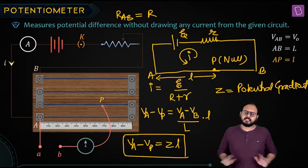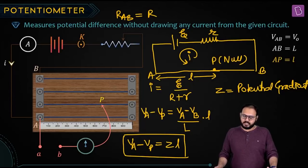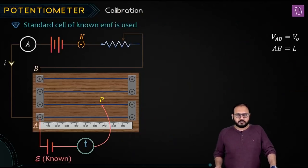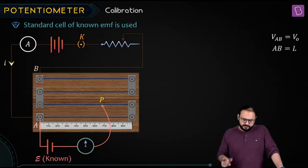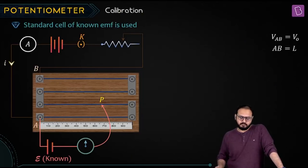That's it — this is it. Trust me, all questions — all questions — are based on this. Nothing else. Let's say in that box (dabba) you have an unknown EMF. Possible? Possible. How does the story start?